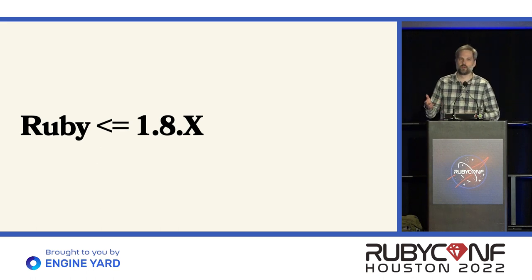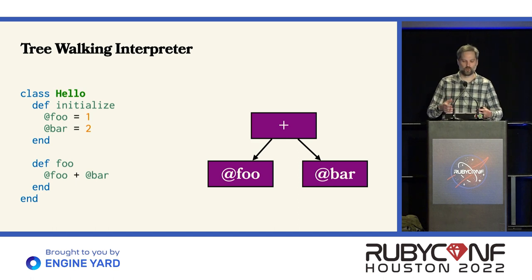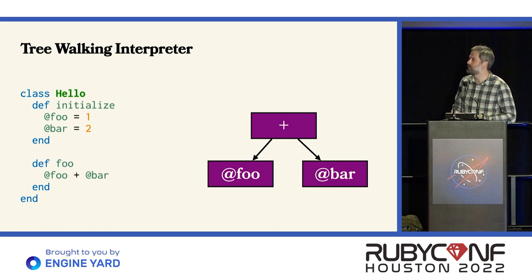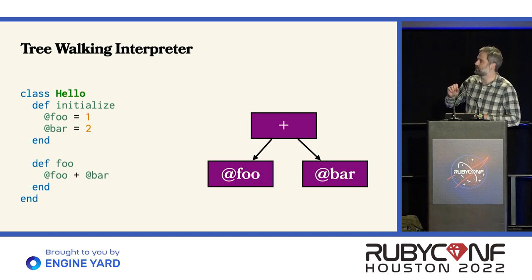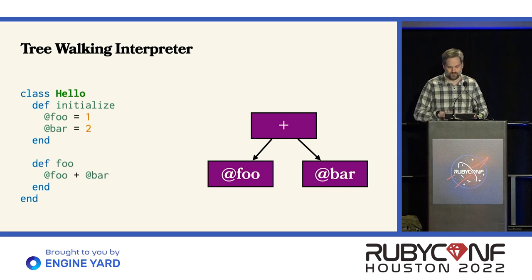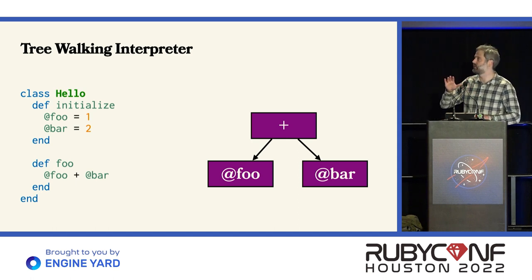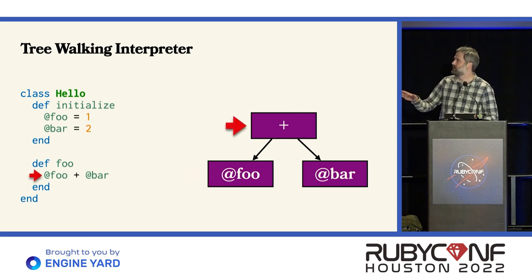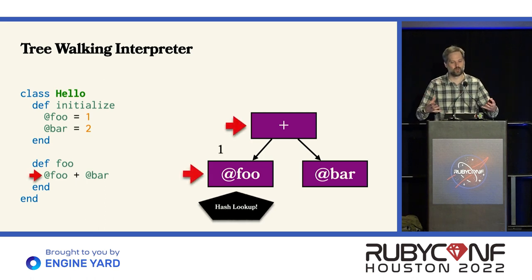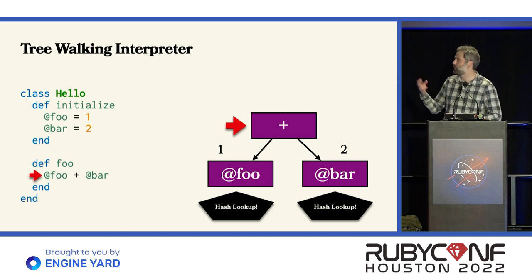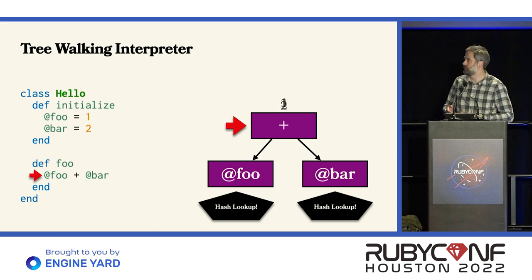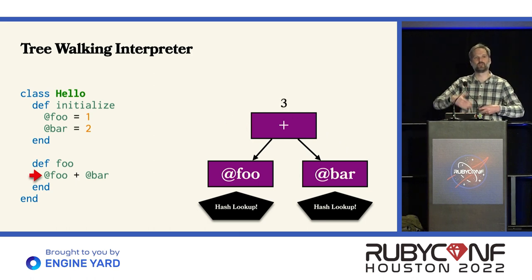Ruby 1.8 and earlier was implemented via a tree-walking interpreter. The way the tree-walking interpreter works is we would take your code and turn it into a tree, then walk each node and evaluate those nodes. Here we have a very simple example — this tree is representing the code inside of the method foo, so we have foo plus bar. We want to evaluate that plus node, but we can't evaluate it yet because we have to evaluate its children. So we evaluate foo, which does a hash lookup to get the value one. Then bar also does a hash lookup to get the value two. They get returned up, plus is able to execute, add those two together, and then return to the caller.